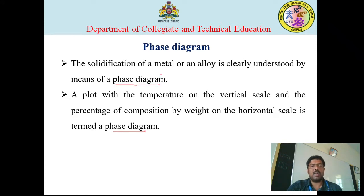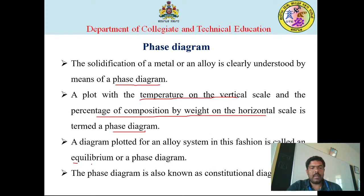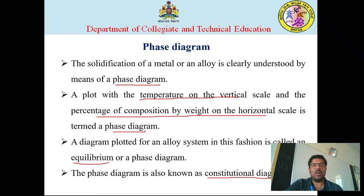Phase diagram can be defined in two ways. The solidification of a metal or an alloy can be clearly understood by means of a phase diagram, which is a plot between temperature on a vertical axis and percentage of composition on a horizontal axis. It is also called an equilibrium diagram, and one more name is constitutional diagram — representing the various stages iron or steel comes across during the molten stage to the solidification process.